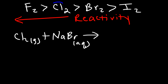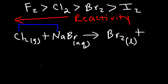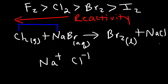A halogen will displace another halogen out of the solution if it's strong enough. Using this activity series, we can see that chlorine is stronger than bromine, so this reaction will work. Chlorine is going to kick bromine out of the solution and pair up with sodium, giving us elemental bromine, which is in a liquid state at room temperature. Sodium pairs up with chlorine — sodium has a +1 charge, chlorine has a −1 charge, so the formula is NaCl, which is soluble, so we write aq. To balance, we put a 2 in front of NaCl and NaBr.